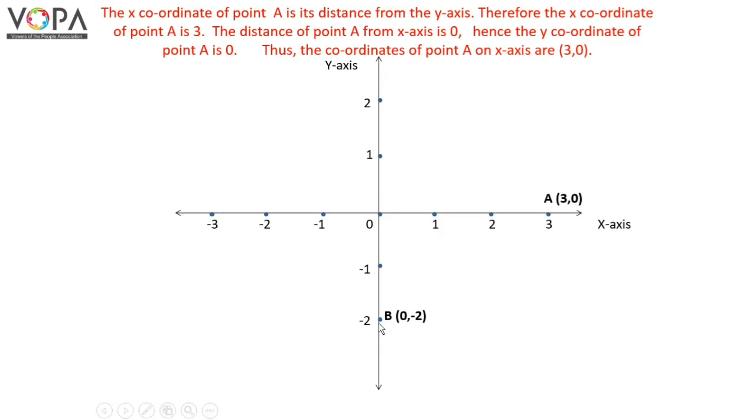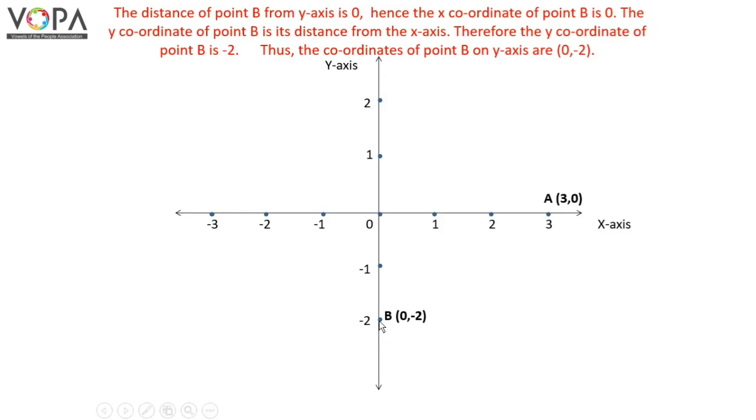Similarly, we can find the coordinates of point B. The distance of point B from the y-axis is 0, hence the x-coordinate of point B is 0. The y-coordinate of point B is its distance from the x-axis, therefore the y-coordinate of point B is -2. Thus, the coordinates of point B on the y-axis are (0, -2).